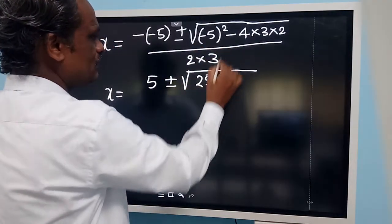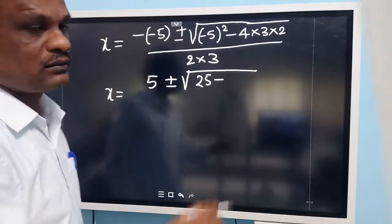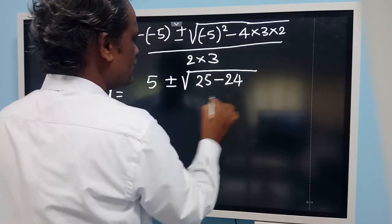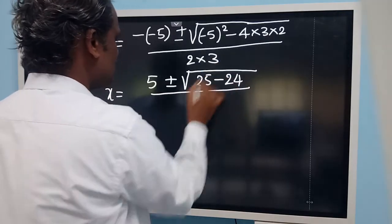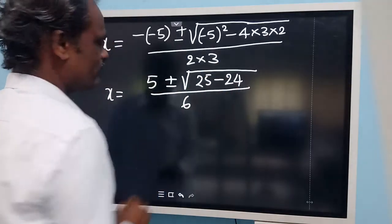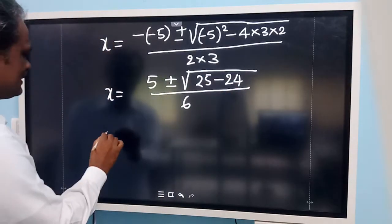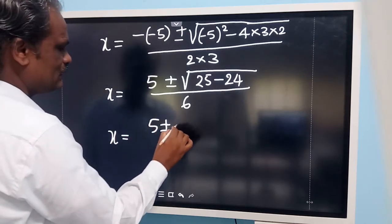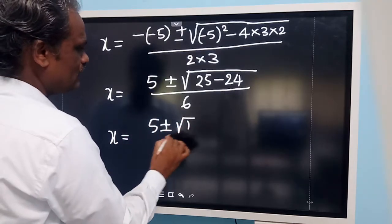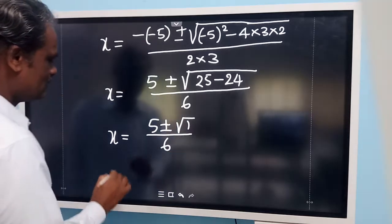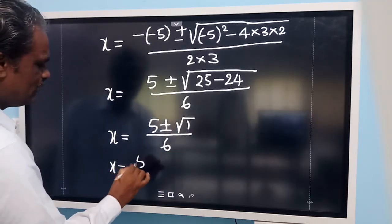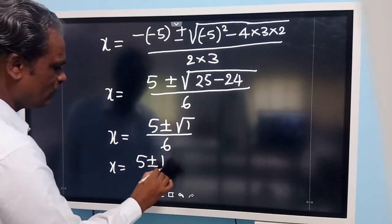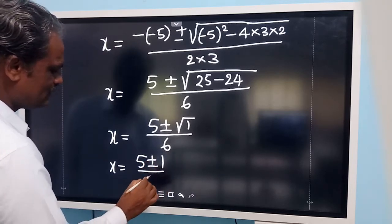We have 25 minus 4 into 3 into 2, which is 24, divided by 2 into 3, which is 6. So x is equal to 5 plus or minus root 1, divided by 6.